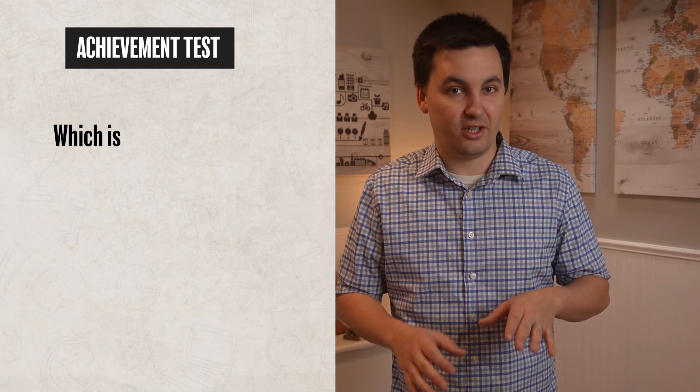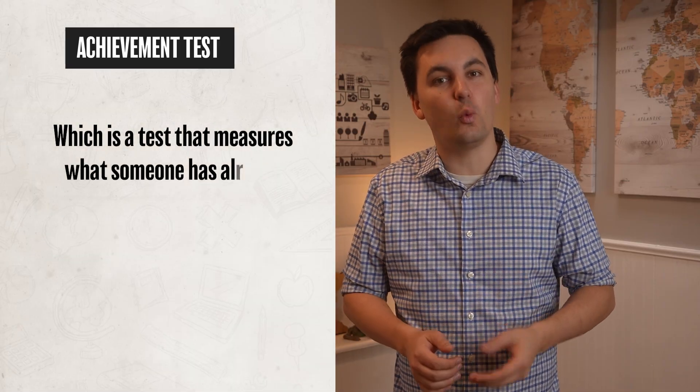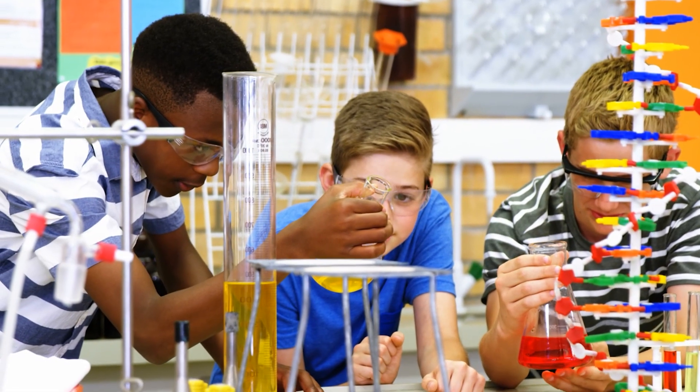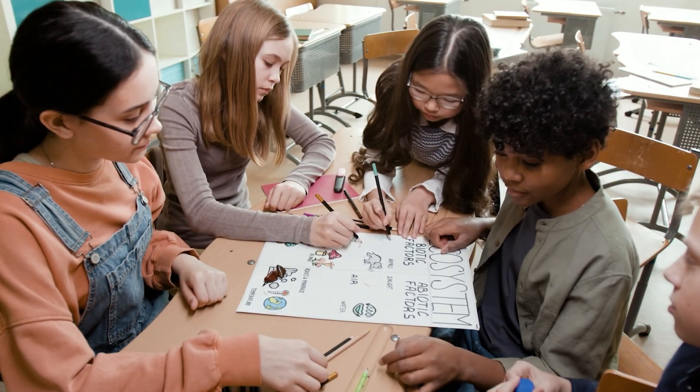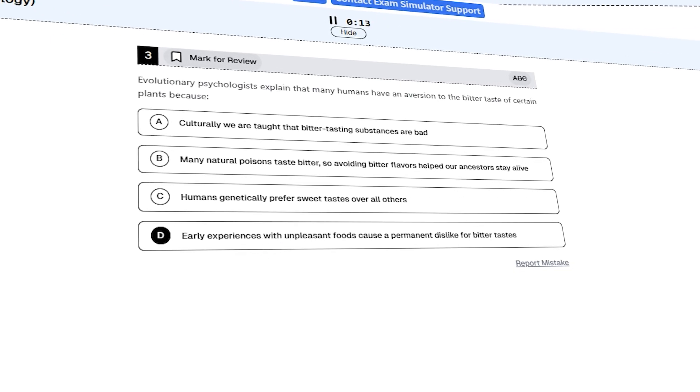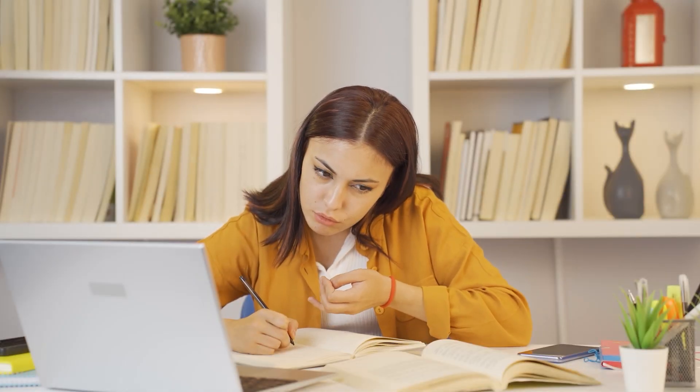This highlights why an IQ score should not be seen as a fixed score that measures someone's worth or potential. Since we've been talking about testing a person's IQ, we also need to discuss the different tests individuals often take. The first is an achievement test, which measures what someone has already learned. These tests focus on knowledge and skills a person has gained through instruction, like attending classes at school. For example, at the end of this unit, you'll most likely take a unit exam, which seeks to measure what you learned — and that would be an example of an achievement test.